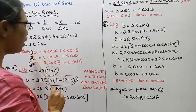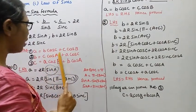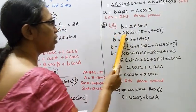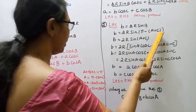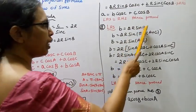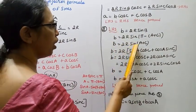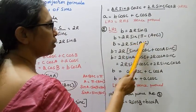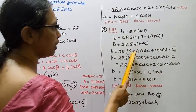Now for the second projection formula: b = c cos A + a cos C. Left hand side: b = 2R sin B. Since A + B + C = π, B = π − (A + C). So sin B = sin(π − (A + C)) = sin(A + C) using sin(180° − θ) = sin θ. Therefore b = 2R sin(A + C).